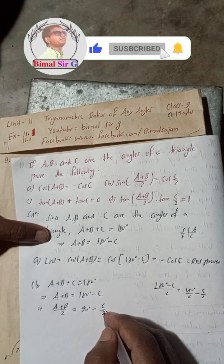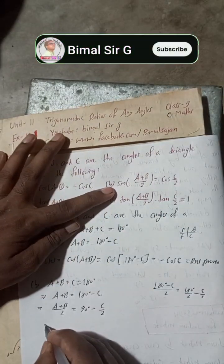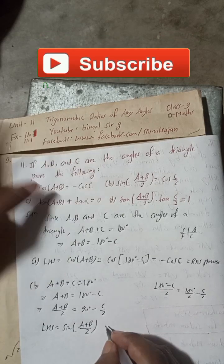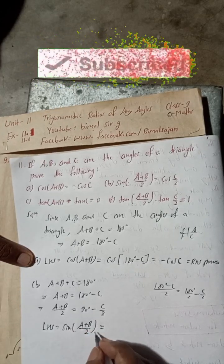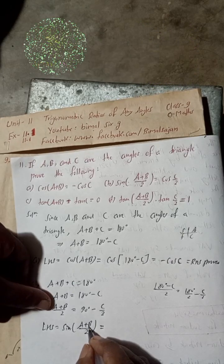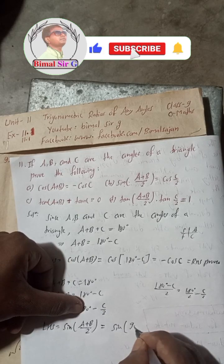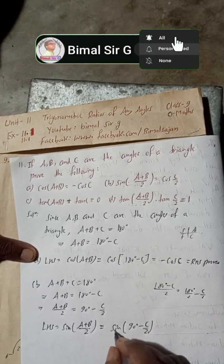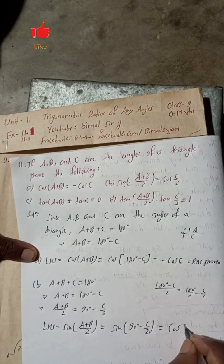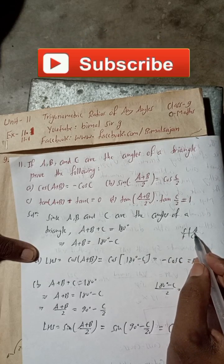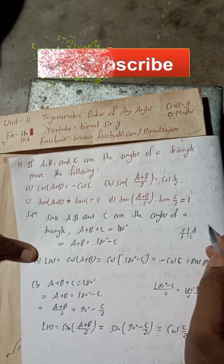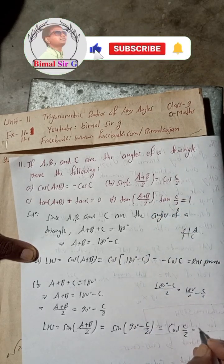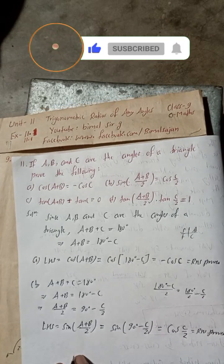Now take LHS. LHS equals sin((A+B)/2). In place of (A+B)/2, we write sin(90° − C/2). Now sin(90° − C/2): since 90° − C/2 is in the first quadrant, all ratios are positive. Sine of (90° − θ) becomes cos θ. So this equals cos(C/2), which equals RHS. Proved. Number B is also proved.